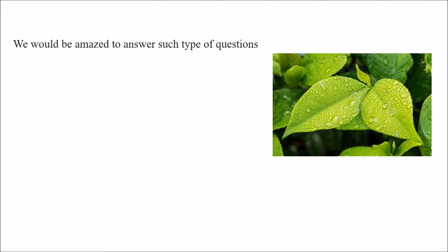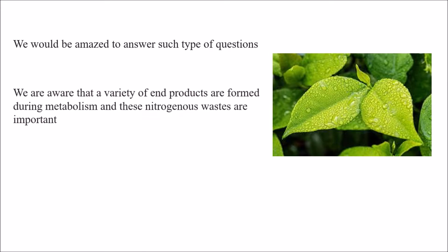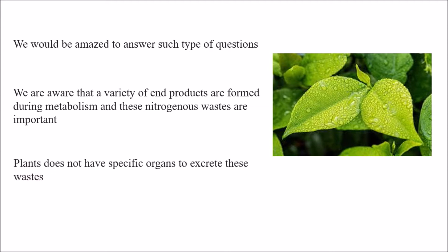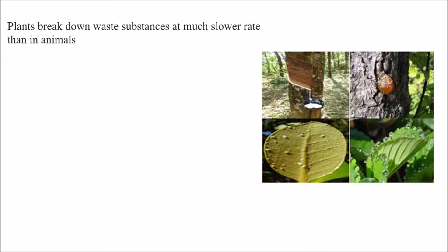What type of method is used by plants for excretion or secretion and release of substances? As we are aware, a variety of end products are formed during metabolism, and these nitrogenous wastes are important. Plants produce waste products during their metabolic activities — the various life processes happening — and those come under nitrogenous waste. Plants do not have specific organs to excrete these wastes, as humans and various animals have specified organs. Plants do not have any specific organ for the excretory process.